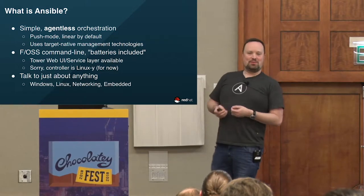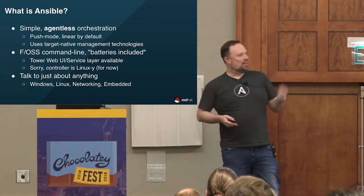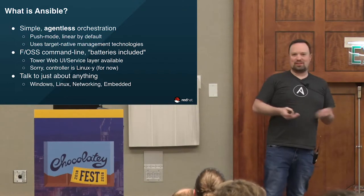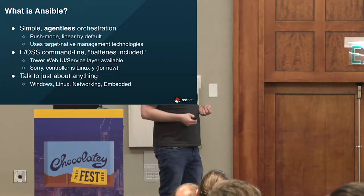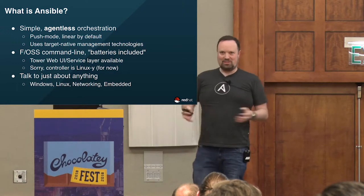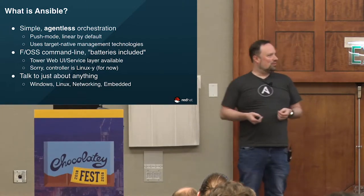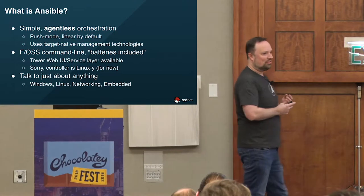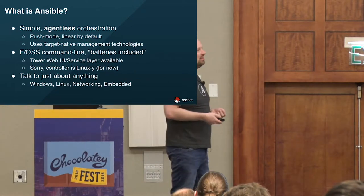The native management technology on Windows is not Python, which is what Ansible itself is written in, so we had to make a choice. The core Ansible product is a free open source command line project — we call it Batteries Included. With the current release, we're at about 2,100 different modules — 2,100 different kinds of resources you can manage just with what's in the box. There's also a web UI, service scheduling, and an RBAC layer as a commercial product called Tower, with an open source version called AWX.